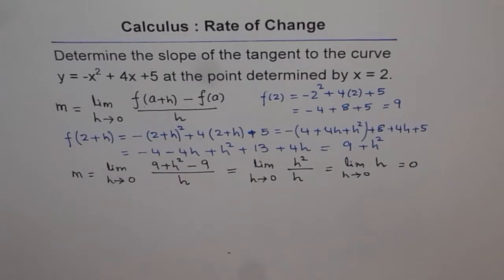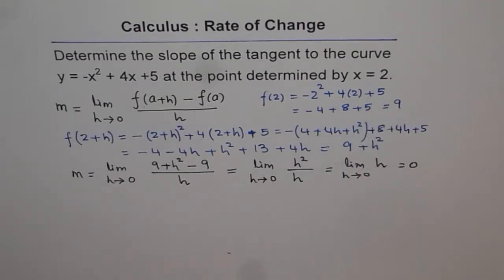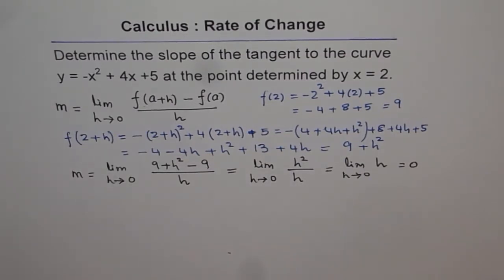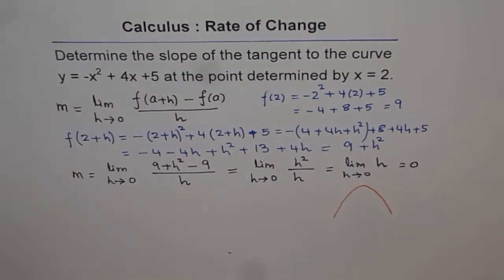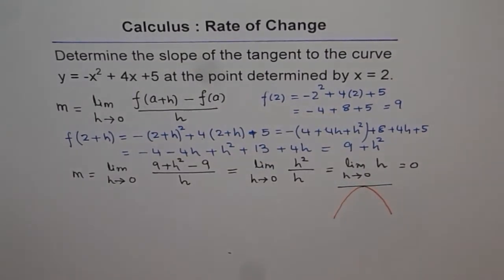The slope of the tangent to this curve at x = 2 is 0. What does it mean? It means that this parabola has a vertex at x = 2 and there the slope is 0. This is a parabola opening downwards, and this point is at the vertex, which is why we got a slope of 0.